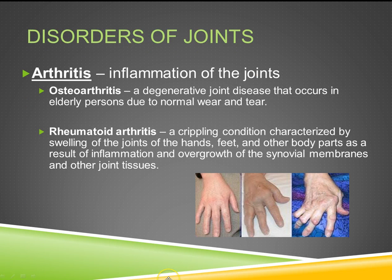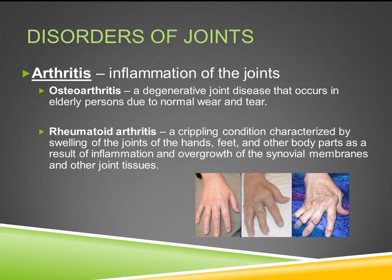Next is arthritis, which is inflammation of the joints. There are different types: osteoarthritis and rheumatoid arthritis. Osteoarthritis is a degenerative joint disease occurring in elderly persons due to normal wear and tear. Over time, activities like constantly walking, running, and exercising can create osteoarthritis as things gradually break down.